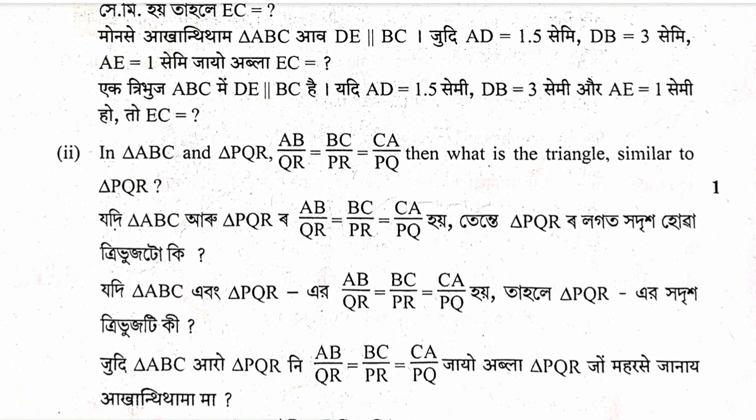In triangle ABC and triangle PQR, AB by QR equals BC by PR equals CA by PQ. Then which triangle is similar to triangle PQR? Draw the corresponding parts and find the answer by matching corresponding vertices.